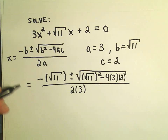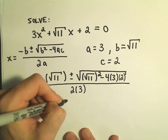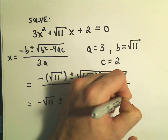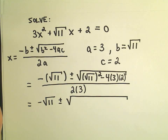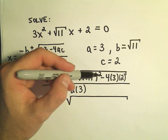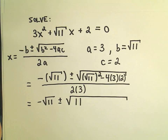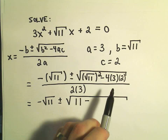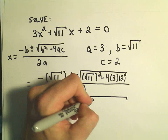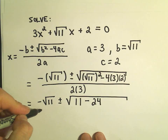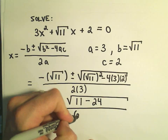Now it's just a matter of doing some arithmetic. We have negative square root of 11 out front, plus or minus. If we take the square root of 11 and square it, the square root and the square cancel each other out, so that's just 11. Then 4 times 3 gives us 12, and 12 times 2 gives us 24. We divide all of that by 2 times 3, which is 6.